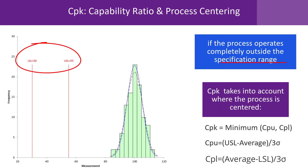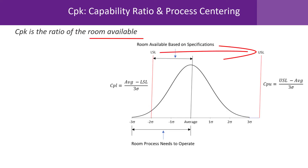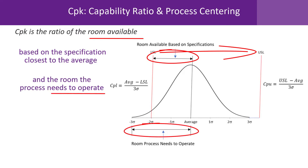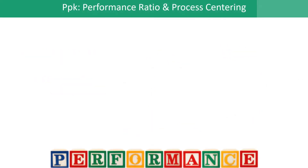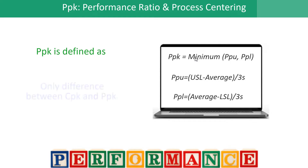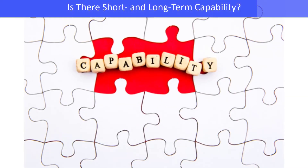CPK is the minimum of a capability based on the upper spec and a capability based on the lower spec. Instead of the whole specification range, we're taking half the specification range. For example, for the lower spec, the capability is the average minus the lower spec limit — the available room — and three sigma is the room the process needs to operate. So capability is a distance from the average to the spec limit divided by three sigma. PPK is the same as CPK, except we use the calculated standard deviation S instead of sigma from the range control chart. It's based on the specification closest to the average.